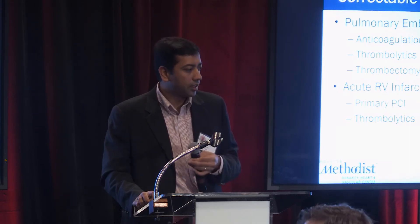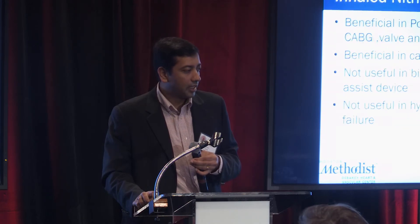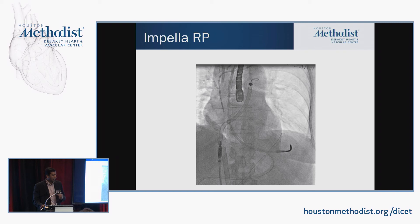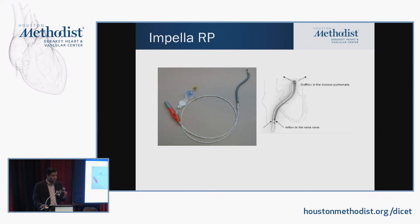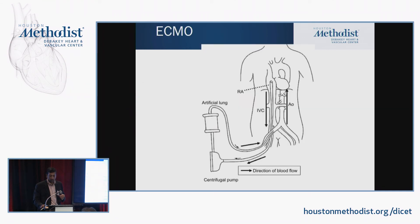Use protective ventilation with low PEEP and address the underlying cause. If it's PE, consider thrombolytics; if it's acute RV infarct, primary PCI. Inhaled nitric oxide is helpful, and consider Impella RP or ECMO — especially in patients with acute RV failure in the postoperative setting or post-MI.